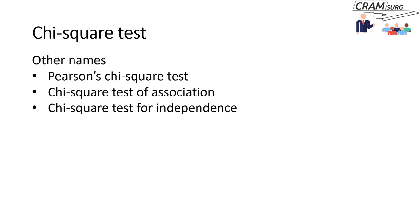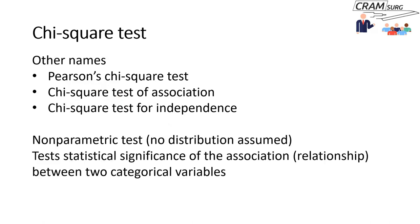The chi-square test is also known by some other names: the Pearson's chi-square test, the chi-square test of association, or the chi-square test of independence. There are some variants of chi-square tests that I'm not going to elaborate on today, but I'll name those variants at the end of this talk. Essentially, this is a non-parametric test — most statistical methods are divided into two categories: parametric tests and non-parametric tests.